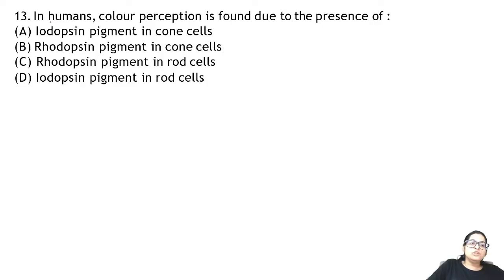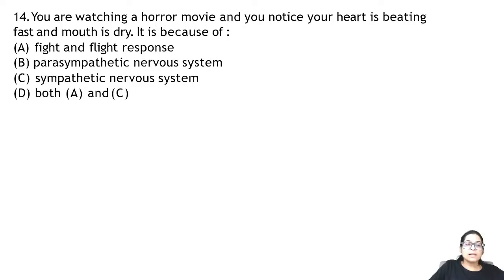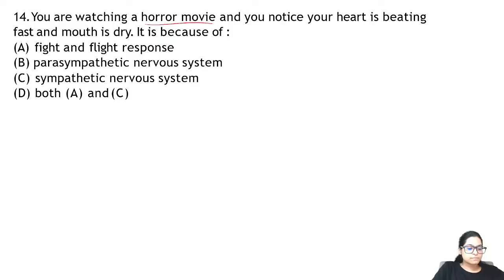Zoology Question 13: human colour perception is possible due to the presence of — we can see so many colours due to iodopsin pigment that is present in the cone cells.